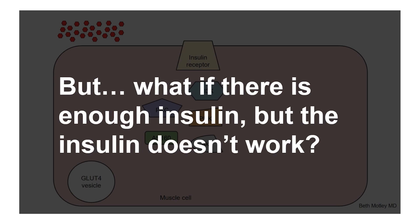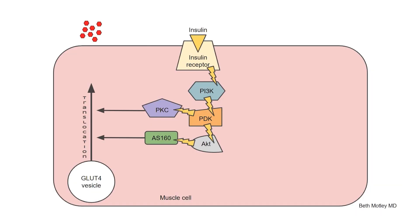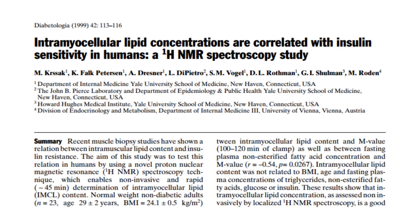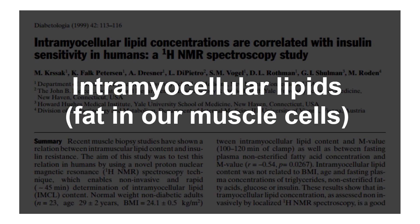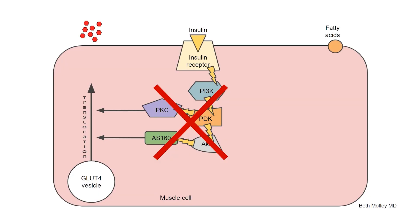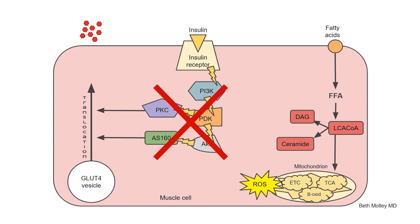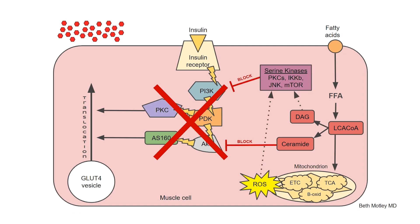But what if there is enough insulin, but for some reason the insulin doesn't work? So in this scenario, we have the key to unlock the door — it looks like all the players are in place — but something is gumming up the lock in our muscle cell. What's gumming up the lock? It's intramyocellular lipids, or fat in our muscle cells. In response to a high-fat diet, those fatty acids in the bloodstream enter the muscle cell, break down into free fatty acids and toxic breakdown products that together block the insulin signaling pathway.